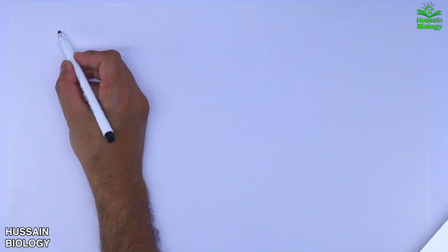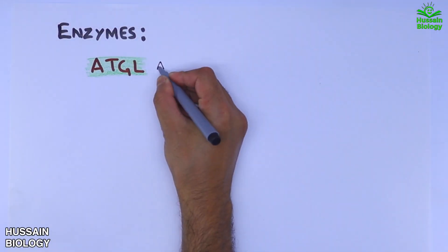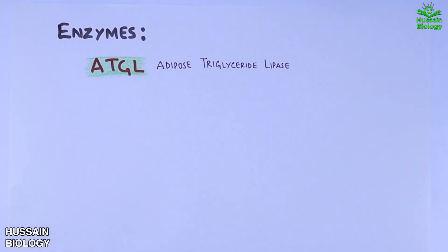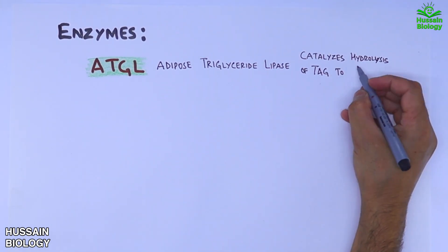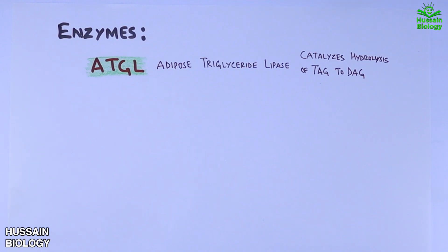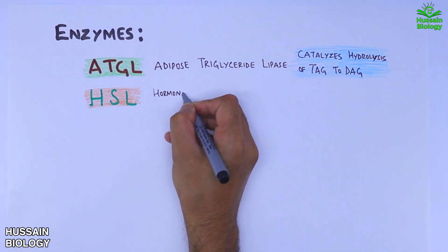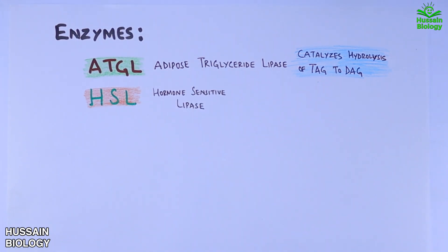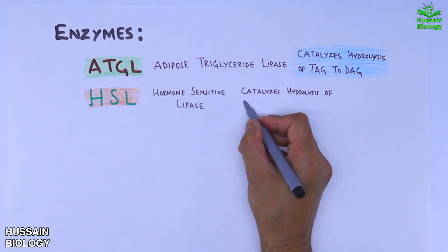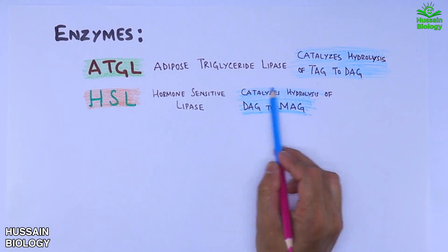Now let's first see what enzymes drive the lipolysis pathway. First we have the ATGL enzyme, adipose triglyceride lipase. It catalyzes hydrolysis of triacylglycerol into diacylglycerol. Second enzyme is the HSL enzyme, hormone sensitive lipase. It catalyzes hydrolysis of diacylglycerol into monoacylglycerol.